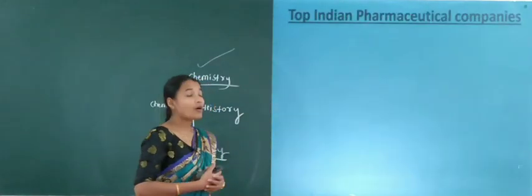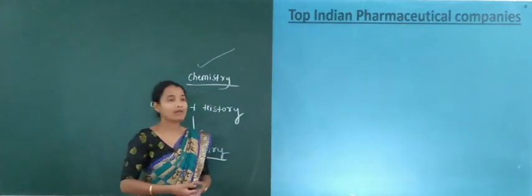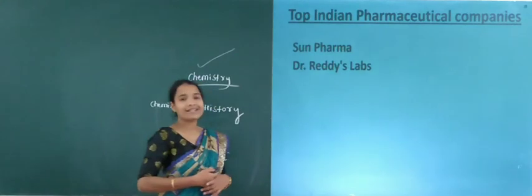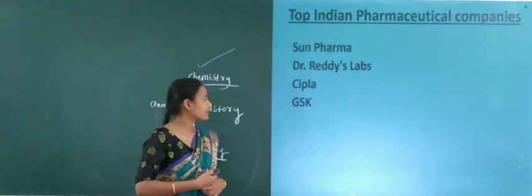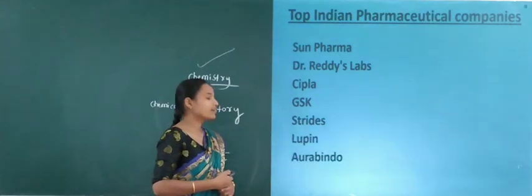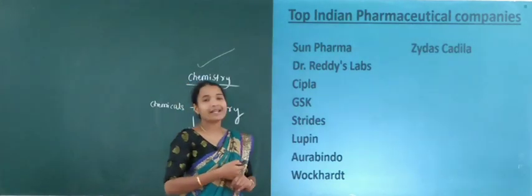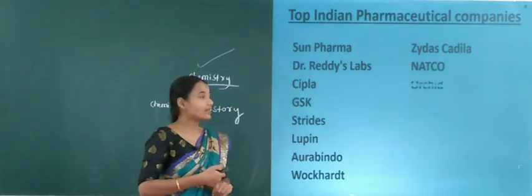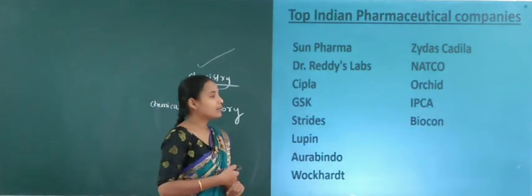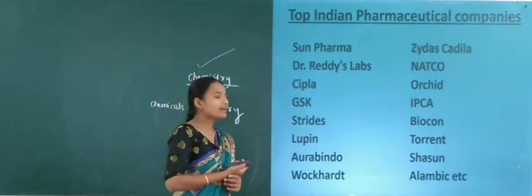Top Indian pharmaceutical companies include: Sun Pharma, Dr. Reddy's Lab, Cipla, GSK, Strides, Lupin, Aurobindo, Unichem, Zydus Cadila, Natco, Orchid, IPCA, Biocon, Torrent, Shasun, Alembic, etc.